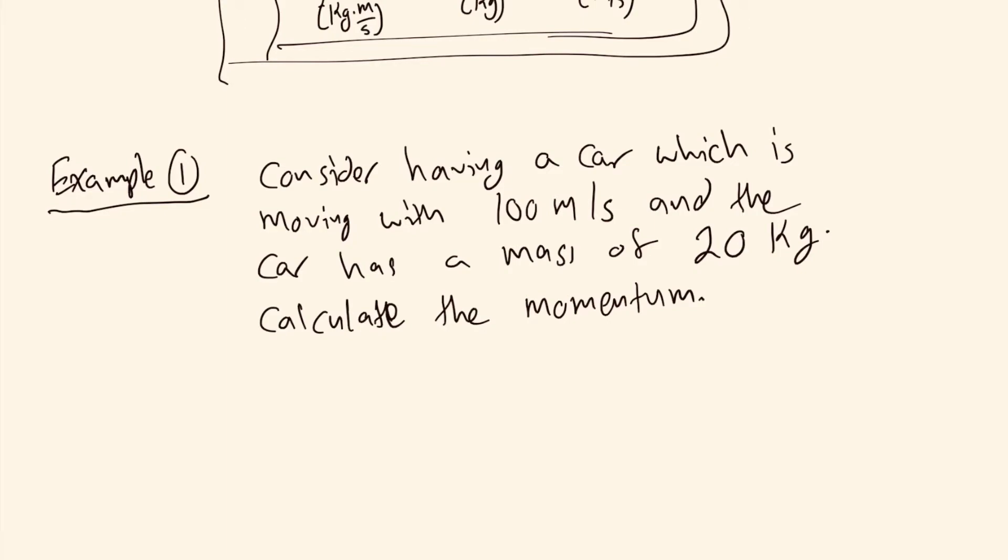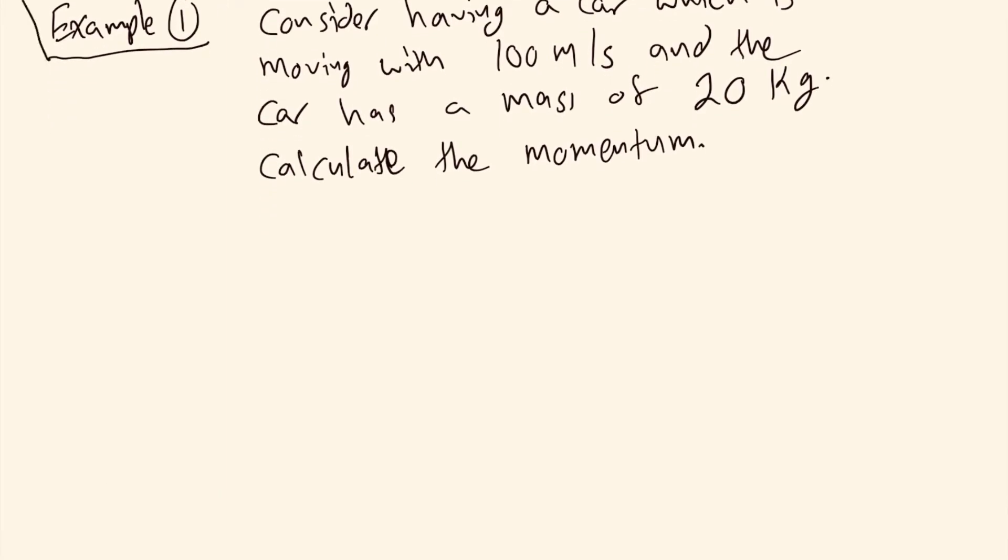Now the first thing that you need to do whenever you're encountering any physics problem or any engineering problem in general, always take a look at the statement, take a look at the problem and then you're going to be writing down what is known and what is unknown to you in order to be able to solve the problem. So what is known to us? The velocity v, 100 meters per second. The mass, 20 kilograms. These are my knowns within the problem. And what are we trying to find? The momentum. So this is the unknown p which is basically a question mark, we're trying to find it.